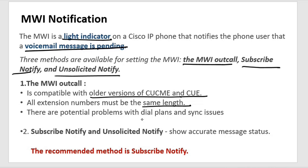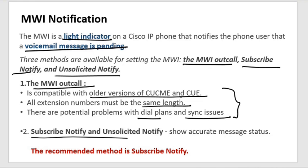Due to those problems, out-call is not used now, though you still need to know about it. It uses mask comparison. Subscribe-notify and unsolicited-notify are the methods used today. Subscribe-notify shows accurate message counts and is the recommended notification method.